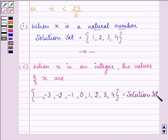So, when x is a natural number, our solution set are having elements 1, 2, 3, 4 and when x is an integer, the values of x are 4, 3, 2, 1, 0, minus 1, minus 2, minus 3 and so on. So, this completes the question that was given to us. I hope you enjoyed the session. Do remember the rules and bye for now.